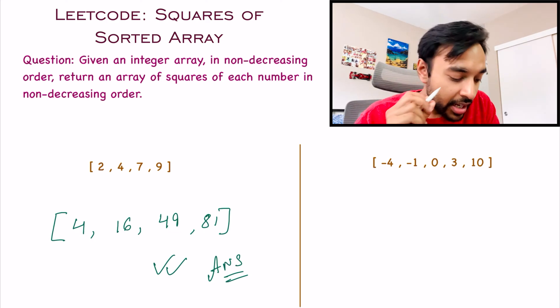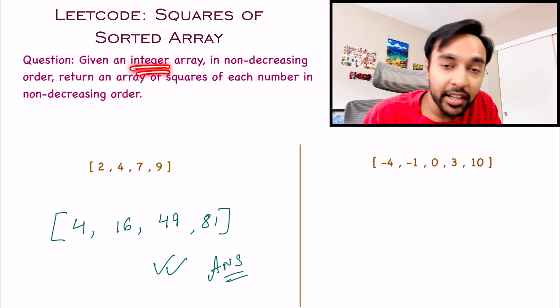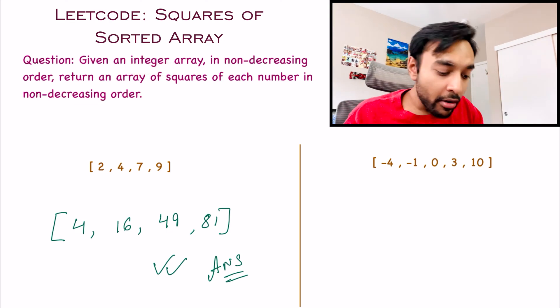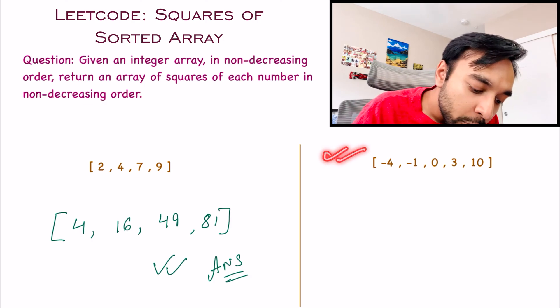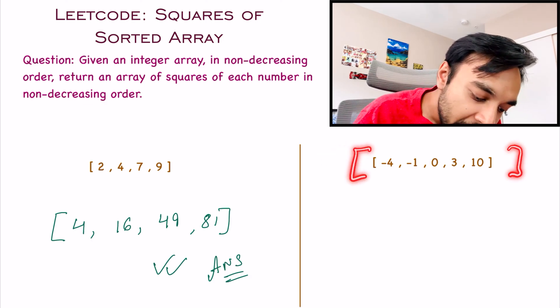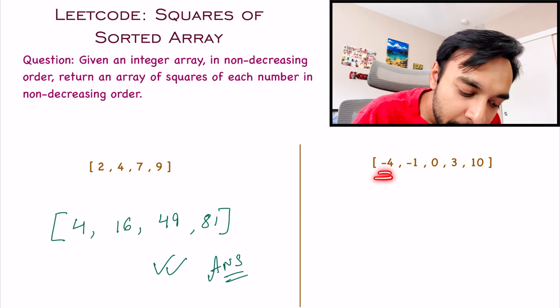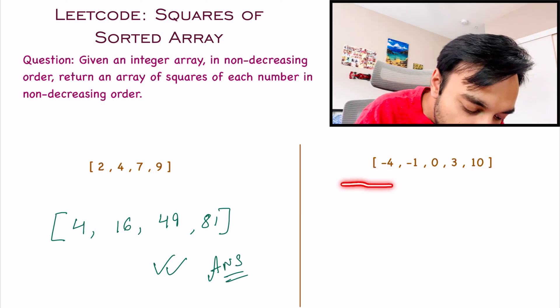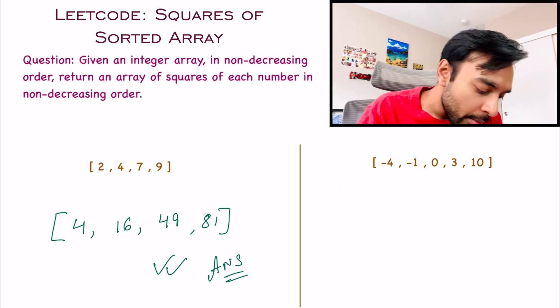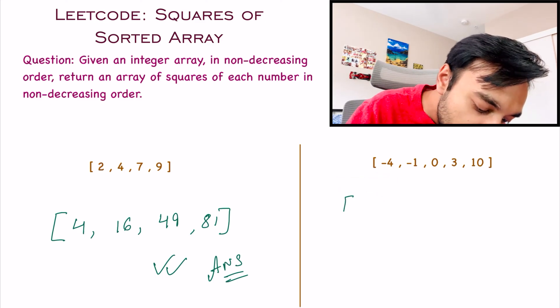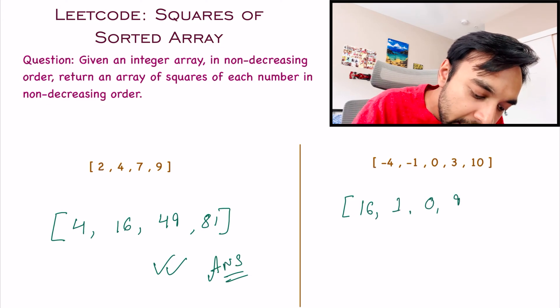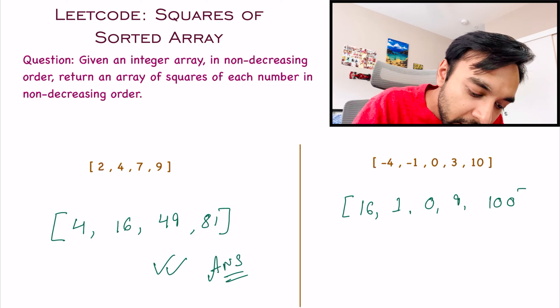But there is a catch. This array is an integer array, and integers could be both negative and positive. For example, in test case number 2, we have this array. And you can see that it has negative elements and both positive elements. Right now, this array is sorted in an ascending order. But what happens when you square each of the elements? This will become 16, then 1, then 0, then 9, and then 100.